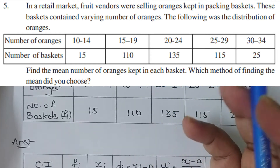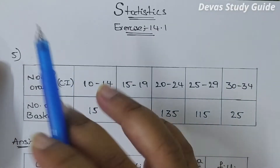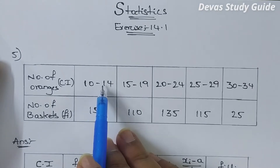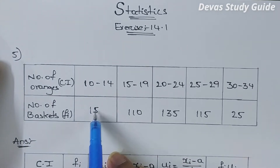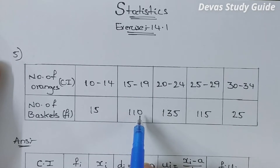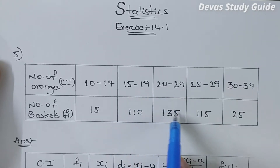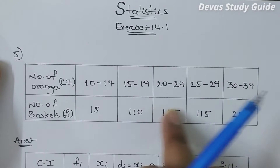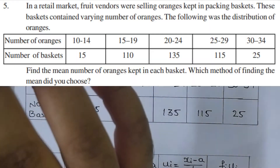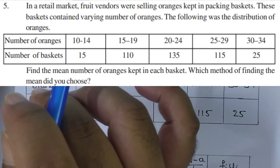The following is the distribution of oranges. The number of oranges is 10 to 14. In 10 to 14, there are 10 baskets; in 15 to 19, there are 80 baskets; in 22 to 24, there are 35 baskets and 25 baskets. Find the mean number of oranges kept in each basket.